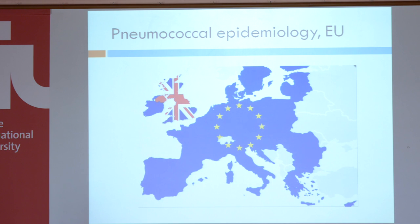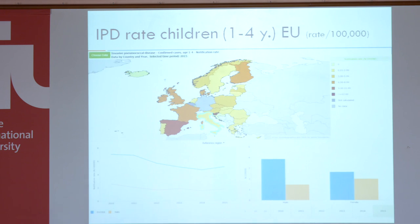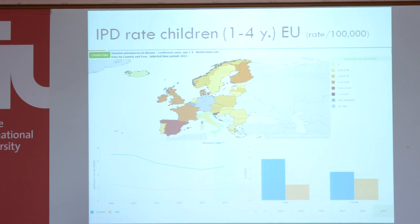Let's look at what we can find from our unified European Union. We have the ECDC, and the ECDC is registering invasive pneumococcal disease throughout Europe. You can produce nice maps to look at IPD rates — here for children from these countries — and this is the trend in overall invasive pneumococcal disease in children: a drop, and here at the end, a little bit of a rise. This is Italy as an example.